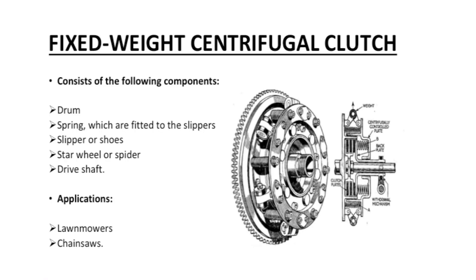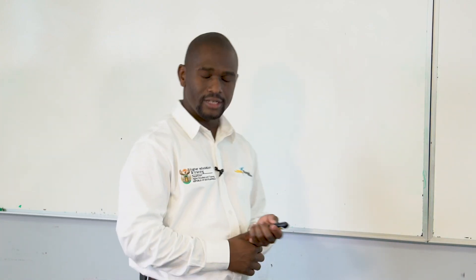Fixed weight centrifugal clutch components: component number one is a drum. Component number two is a spring, which is fitted to the slippers. Then we have slippers, also called shoes. A star wheel, also called a spider. And a drive shaft. Applications: they are used on lawn mowers and chainsaws.